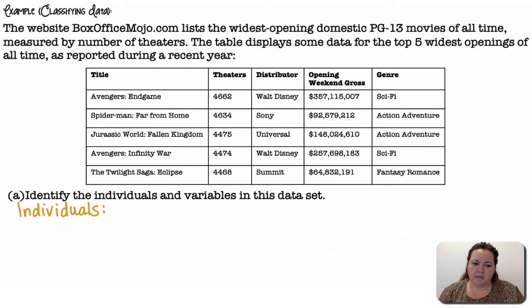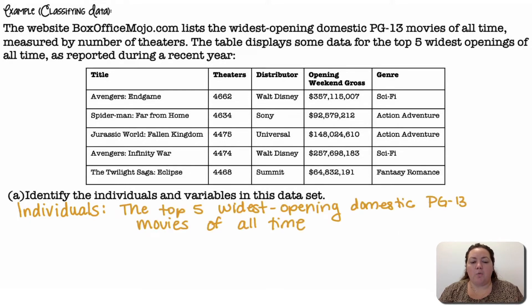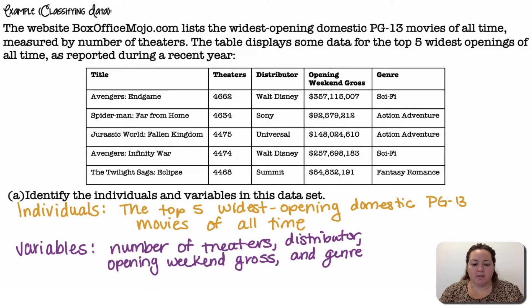Well, the individuals is what I'm collecting data on, are the top five widest opening domestic PG-13 movies of all time. The variables are the number of theaters, the distributor, the opening weekend gross, and genre. So there are four variables.